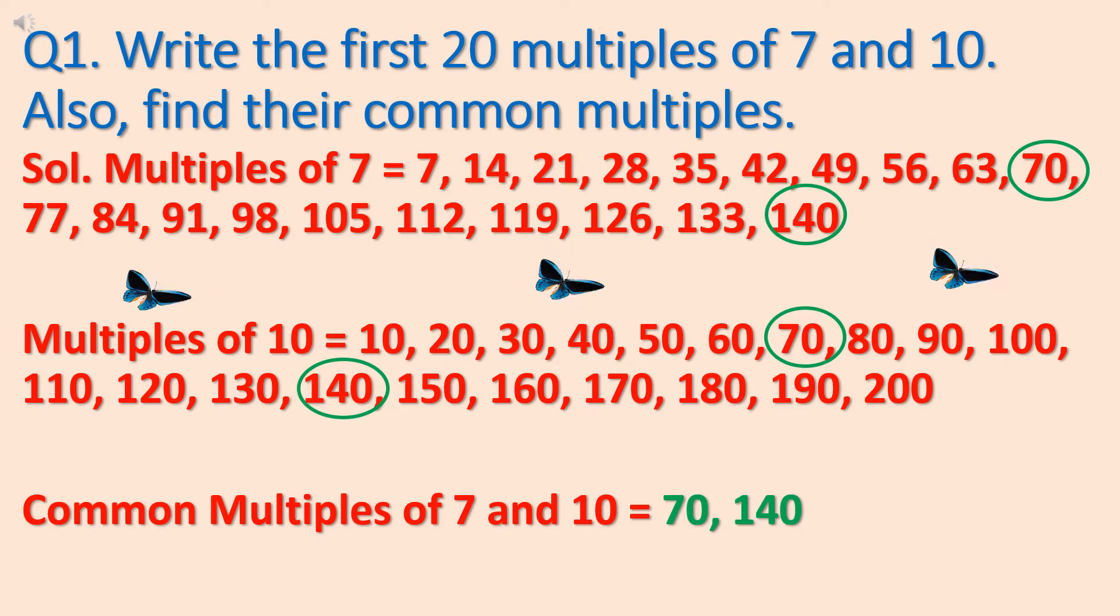When you multiply 7 by 11, you get 77. When you multiply 7 by 12, you get 84. When you multiply 7 by 13, you get 91. 7 multiplied by 14 is equal to 98. 7 multiplied by 15 is equal to 105. Same way, you can find out first 20 multiples of 7.